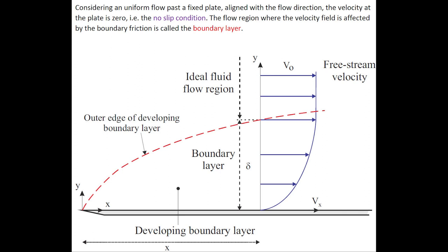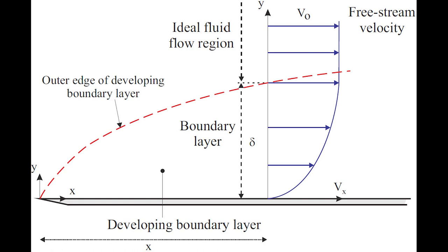Considering a uniform flow past a fixed plate aligned with the flow direction, the velocity at the plate is zero, that is a no-slip condition. The region where the velocity field is affected by the boundary friction is called the boundary layer.